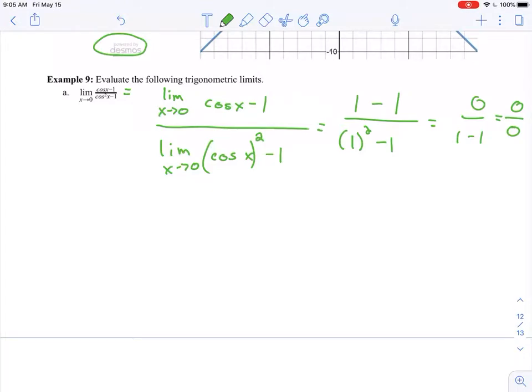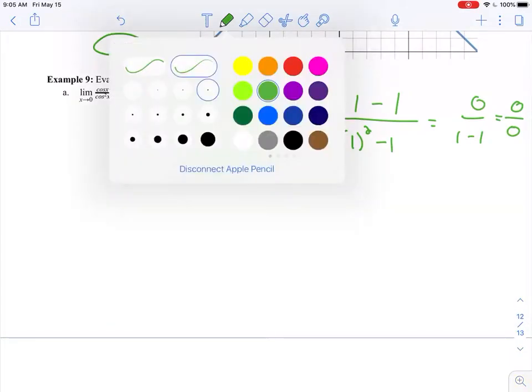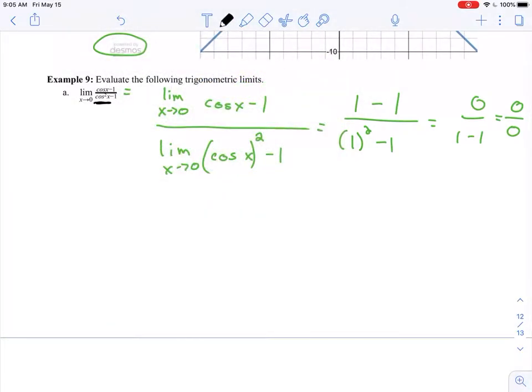Some of you might look at this cosine squared x minus 1 and think about the Pythagorean identity, sine squared x plus cosine squared x equals 1. That's good that you're thinking about it, and I'm really happy that you know that trig identity. That's really the one that I think you should know. But actually, we're not going to be using that here. We actually just need to factor this.